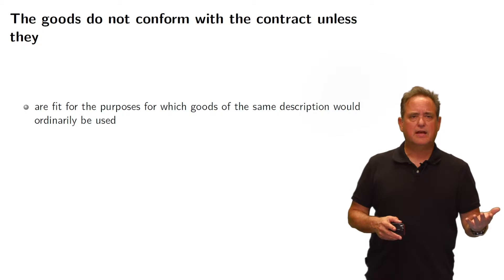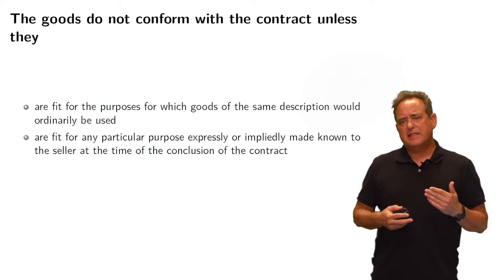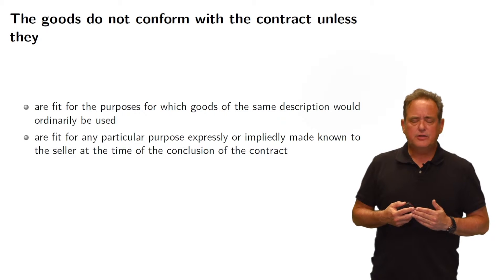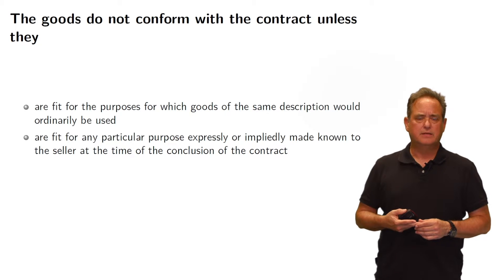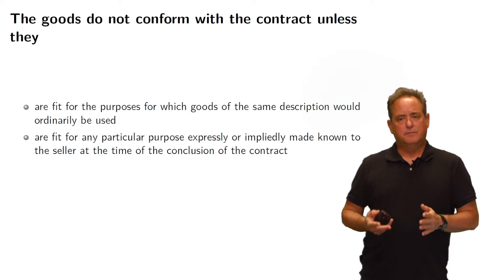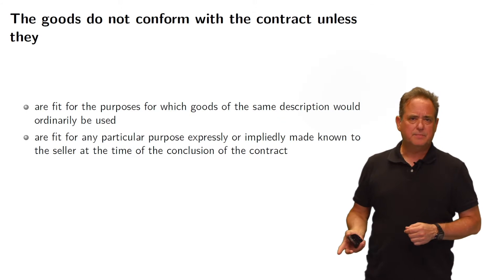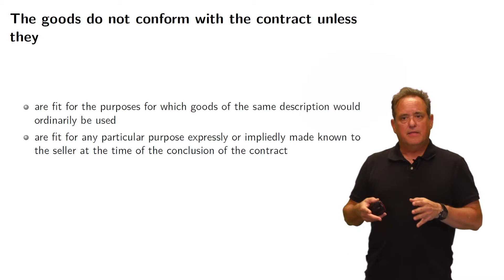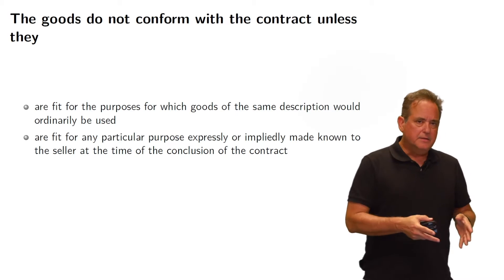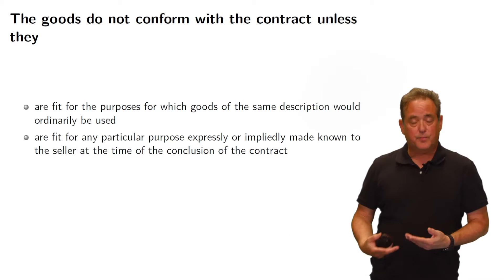Goods must be fit for their ordinary purpose — that standard applies in the United States as well. The second qualification is that goods may need to be fit for a particular purpose. Under the UCC, this is called the warranty of fitness for a particular purpose. If the seller guaranteed that the product would match a particular use as opposed to a general use, the seller is bound by that promise.